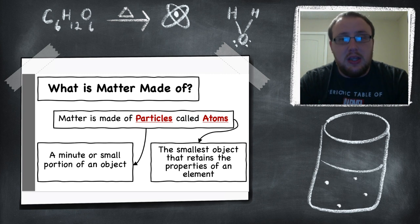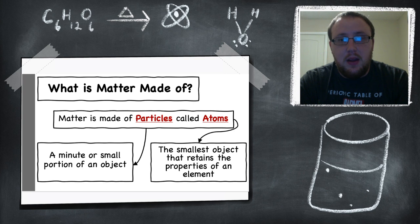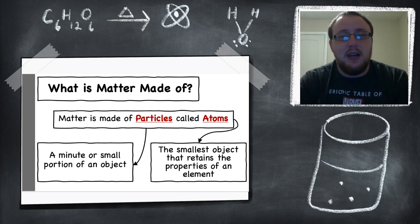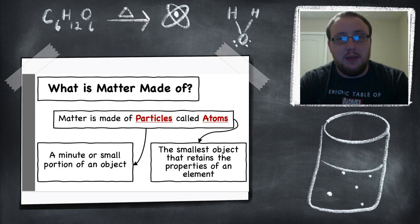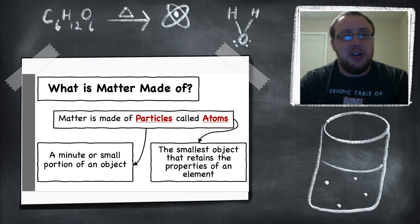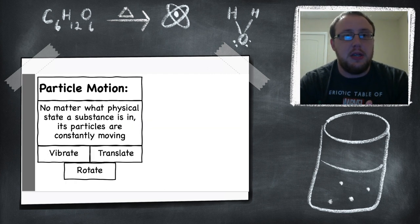An atom is the smallest object that retains the properties of an element. We'll go more in depth on atoms in our next unit, but just to introduce this word here — it's the smallest object that retains the properties of an element, basically the smallest you can divide something down while it still being classified as a specific object. So we have our object broken down into particles, small pieces.